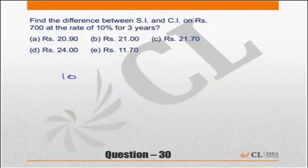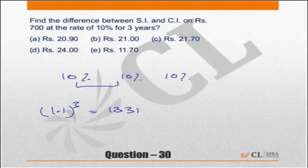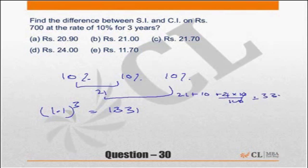So, 3 successive increments of 10% you would have done it as 1.1 cube, if you remember cube of 1.1 this is equal to 1.331, or you could have done it this way: 2 successive increments of 10% are nothing but a single increment of 21%, 10 plus 10 plus 100 by 100, and then these 2 together will give you 21 plus 10 plus 21 into 10 by 100 which is equal to 33.1%. So, either way you could have done this.